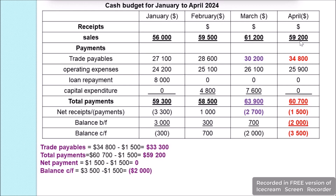For April, sales are $59,200. Trade payables are April purchases of $34,000 plus the $800 carried forward from March, totalling $34,800. Operating expenses are $25,900. Total payments are $60,700. Receipts of $59,200 minus payments of $60,700 gives net payments of $1,500. With the opening overdraft of $2,000, the closing balance would be an overdraft of $3,500, which is against company policy.